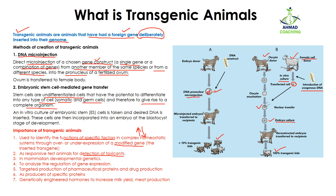For example, if there is a toxin and you don't know how the body is going to respond to it, by producing transgenic animals you can use that particular animal as a test subject to observe how the body responds towards that toxin. In mammalian developmental genetics, you can study how different genes help in the development of a mammal's body and which gene is performing what function.